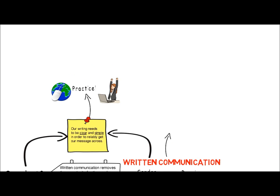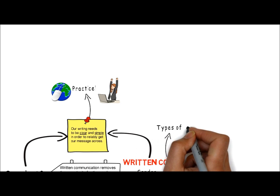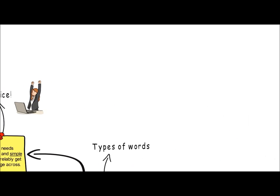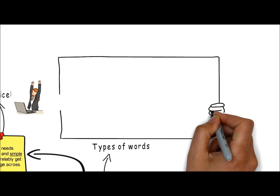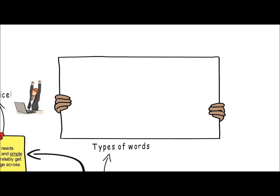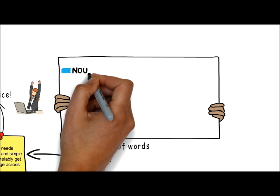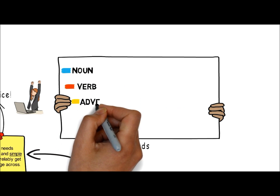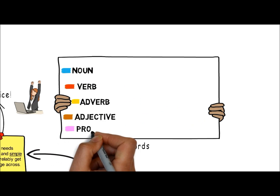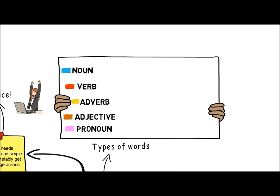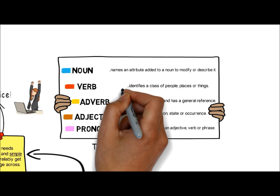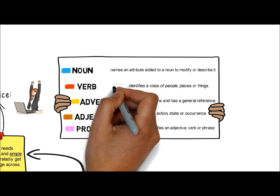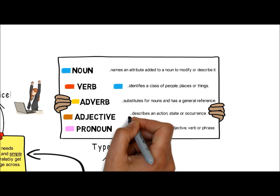Before we look at the principles of writing, we need to review some of the basic types of words. You will all recognise these types of words from school, so let's quickly recap what each of them are. I've listed the definitions for each of the word types to the right. You can pause the video to match the word types up to their definition. A noun identifies a class of people, places or things.